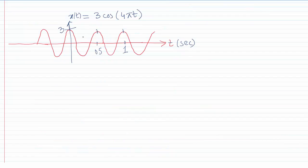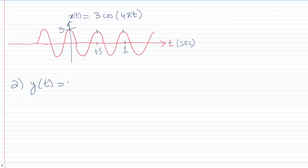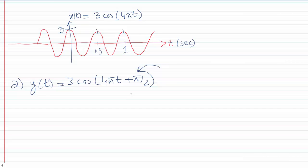That was the plot for 3cos(4πt). For the next example, I have a waveform y(t) = 3cos(4πt + π/2). This waveform is similar to x(t), apart from the fact that we have a phase shift of π/2.